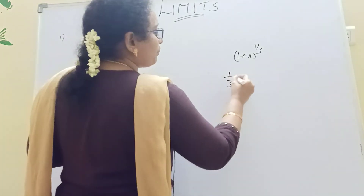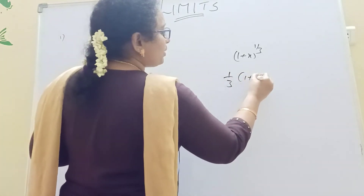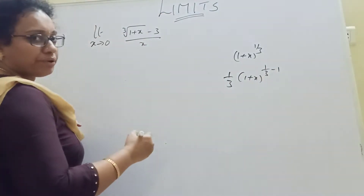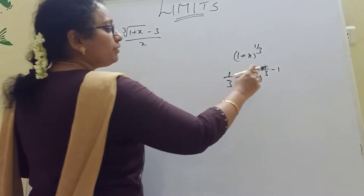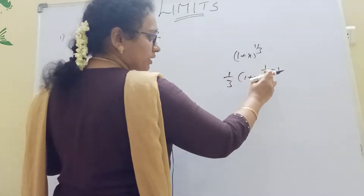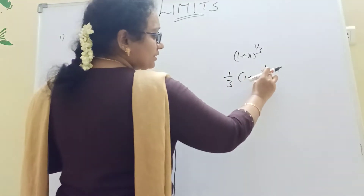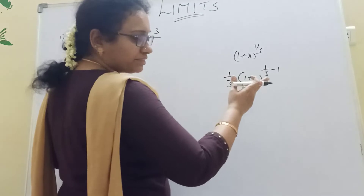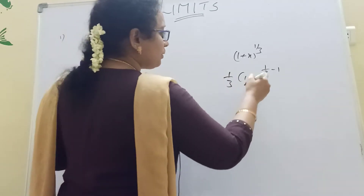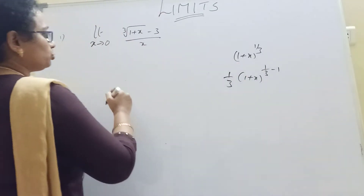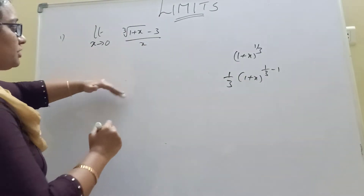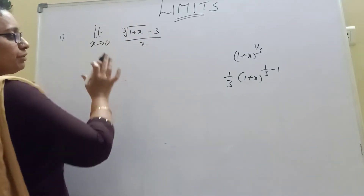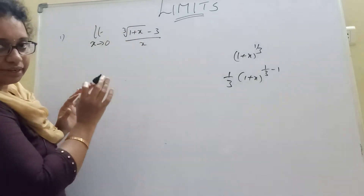So, 1 by 3 — 1 plus x, whole power 1 by 3 minus 1. The definition gives us 1 minus 3, which is minus 2 by 3. So the value of the point is minus 2 by 3.